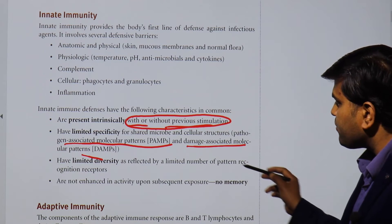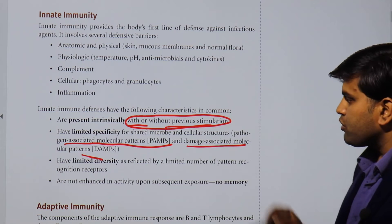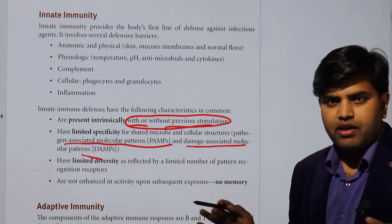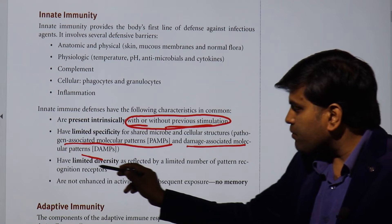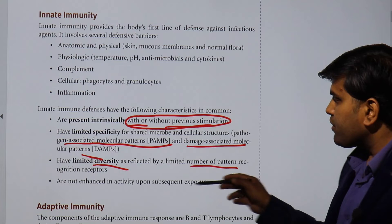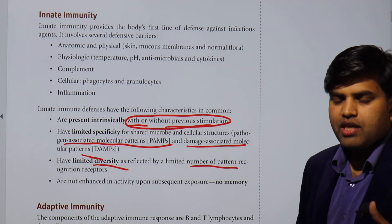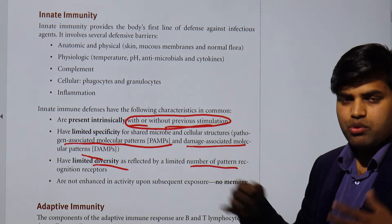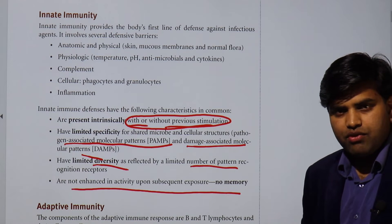Innate immunity has limited diversity, reflected in the limited number of pattern recognition receptors. Since it can only recognize PAMPs and DAMPs, it cannot protect against the large diversity of fungi, bacteria, viruses, and microbes. It has limited diversity and cannot protect against everything because it is fixed. So innate immunity is present intrinsically, has limited specificity, limited diversity, and if organisms have no PAMPs or DAMPs they can bypass the innate immune system. There is also no memory in innate immunity — it is not enhanced upon subsequent exposure.